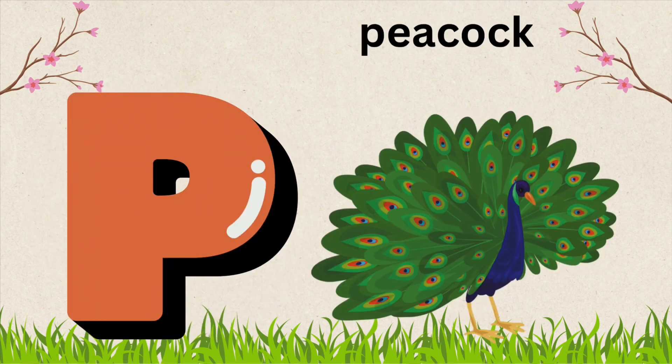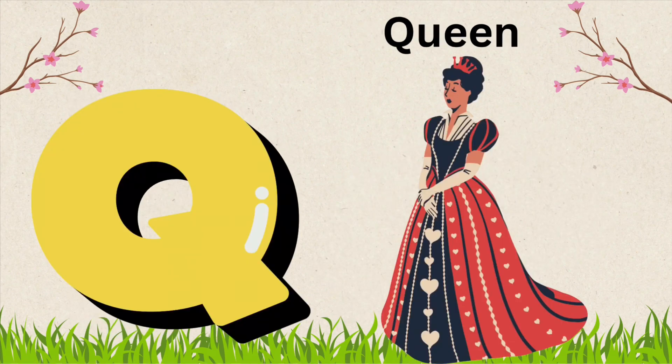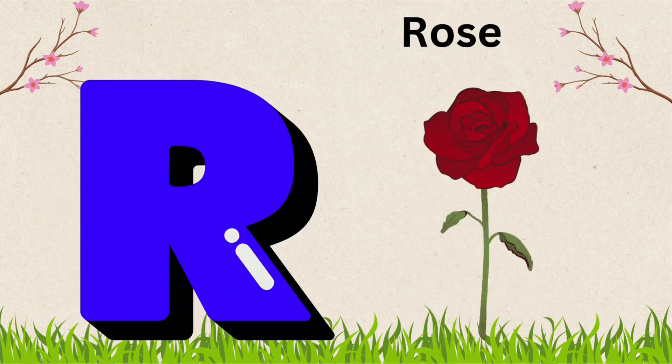P is for Peacock. P, E, A, C, O, C, K, Peacock. Q is for Queen. Q, U, W, E, N, Queen. R is for Rose. R, O, S, E, Rose.